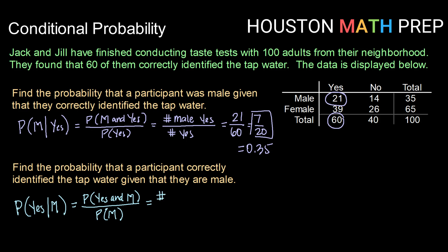So here, this would be the number that correctly identified and were male. That is again, same from last time, that is 21 divided by now we're looking at the total who were male. So now we're looking over here, our total male participants was 35.